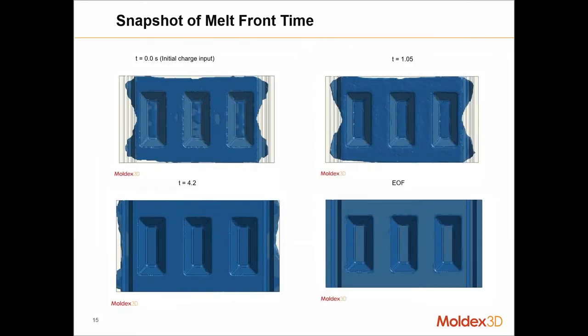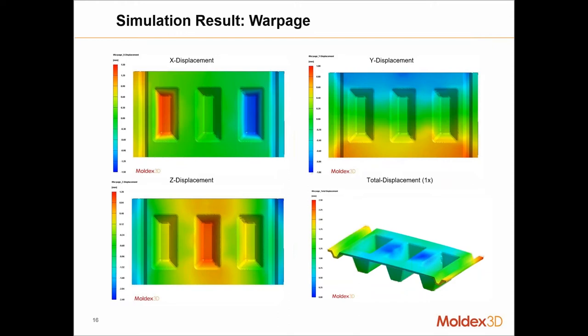Here is a quick snapshot of the flow at different time steps: top left shows the initial charge input from LSDyna, then progression at 1.05 seconds, at 4.2 seconds, and the final part once the compression stage is complete. From MoldX3D once the flow calculation is done, we can export displacements and see how the part is warping, shrinking, or distorting at any region.